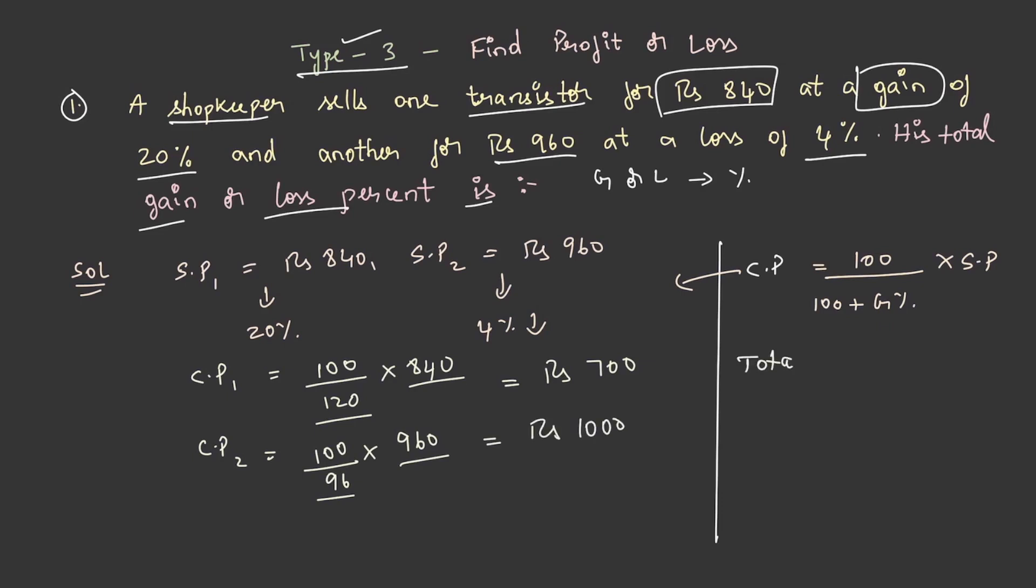Now, the total cost price is equal to rupees 1700 that is by adding these two and the total selling price is equal to rupees 1800 that is by adding these two.